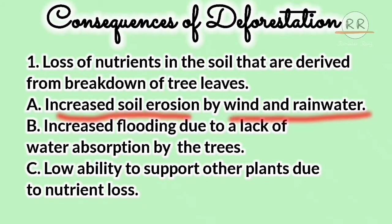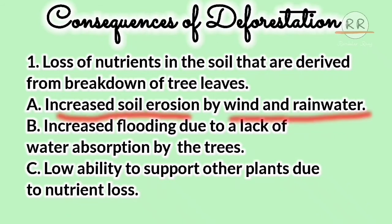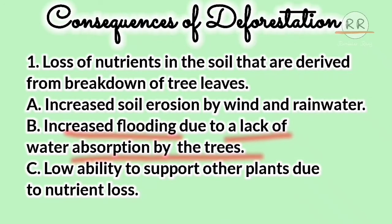दूसरा है: Increased Soil Erosion by Wind and Rain Water। अब पेड़ नहीं होंगे तो पेड़ों की जड़ें जो जमीन को पकड़ के रखती हैं, वो नहीं रहेंगी। अगर तेज़ हवा, आंधी, तूफान, या तेज़ बारिश आएगी तो landslides ज़्यादा आ जाएंगी। जमीन को पकड़ के रखने वाला कोई नहीं होगा तो जमीन बहने लगेगी। साथ ही Increased Flooding due to Lack of Water Absorption by the Trees — पेड़ों की जड़ें पानी absorb कर लेती हैं, पेड़ नहीं होंगे तो flood के chances बहुत ज़्यादा हो जाएंगे।